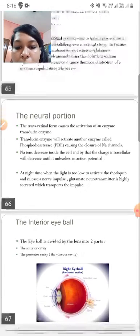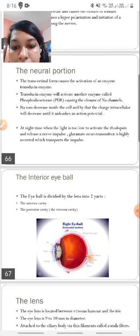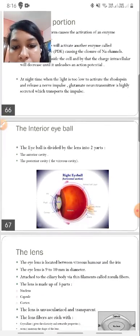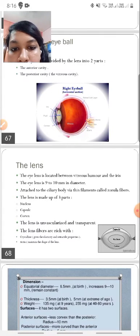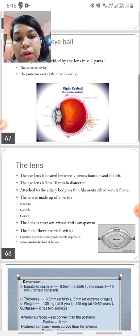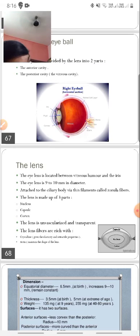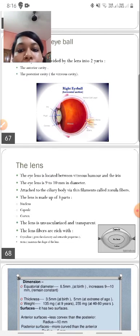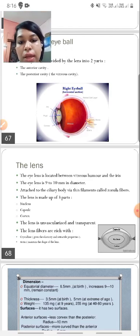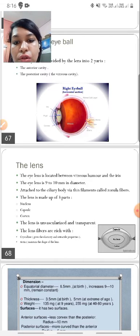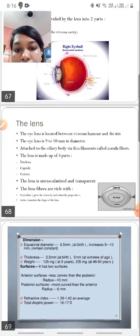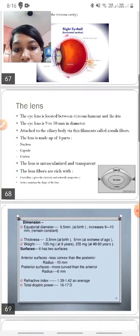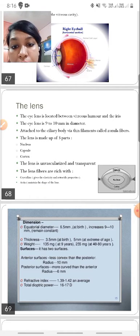Now coming to the interior of the eyeball, it can be divided into the anterior cavity and the posterior cavity. A little bit about the lens. A lens is located between the vitreous humor and the iris. The lens is about 9-10 mm in diameter and it is attached to the ciliary body via thin filaments called zonules. The lens is non-vascularized and transparent.